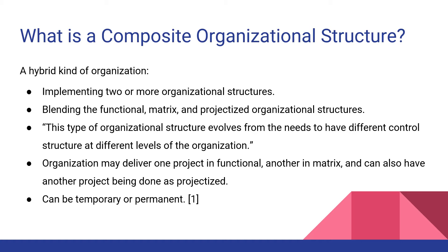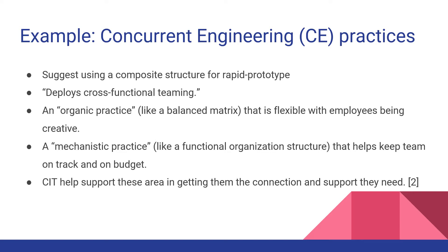An organization may deliver one project in a balanced matrix way, while another is being performed in a functional way. It can also have another project being done as projectized. Such needs could be temporary or permanent. An example of composite organization structure is Concurrent Engineering (CE) Practices.